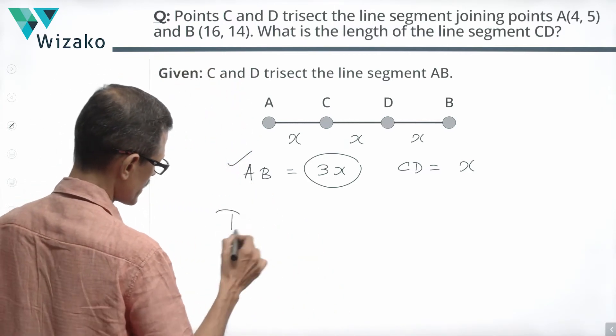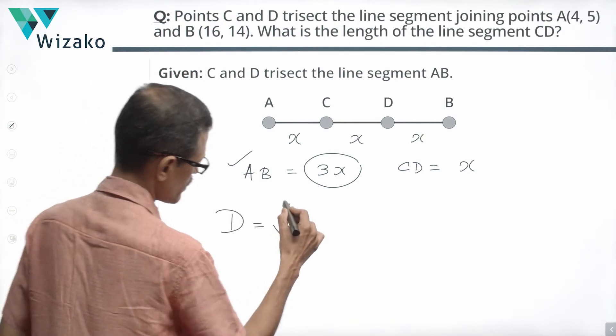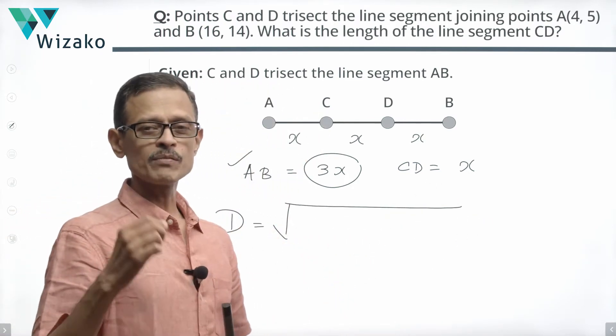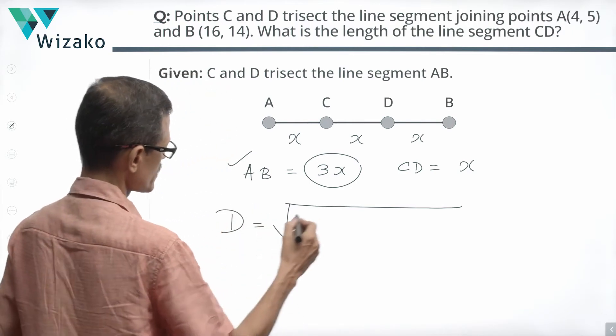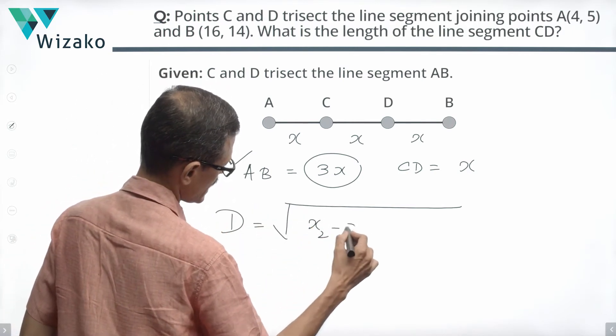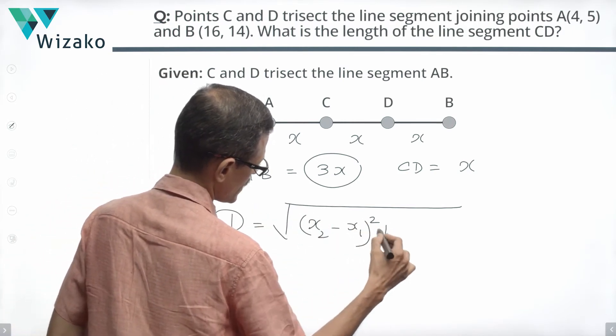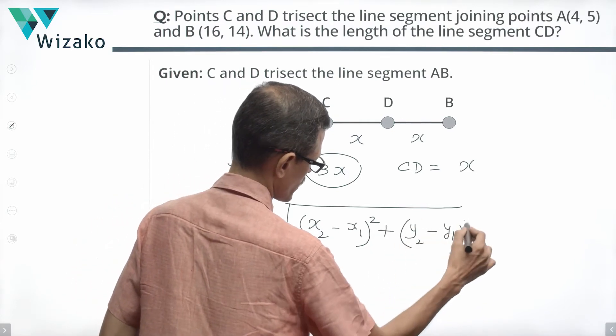How do you find out length of a line segment? The distance or the length of line segment is given by this formula. If it is joining points whose coordinates are X1, Y1 and X2, Y2 the distance is measured as the square root of X2 minus X1 the whole square plus Y2 minus Y1 the whole square.